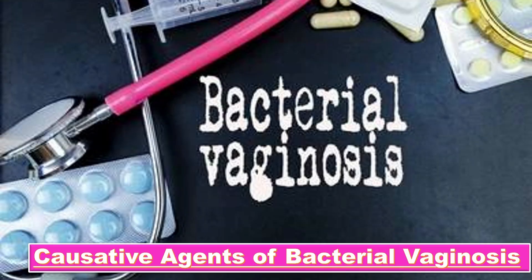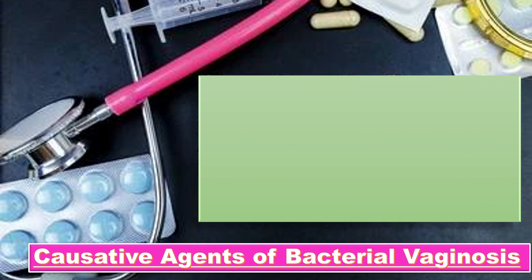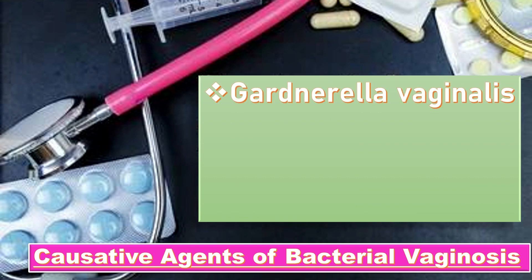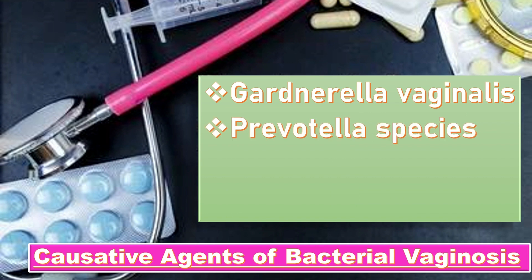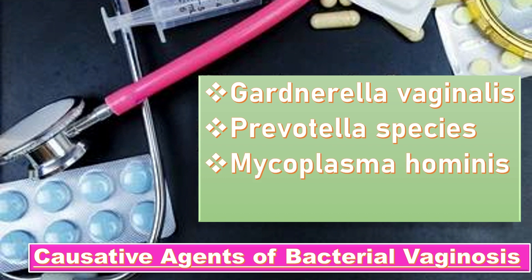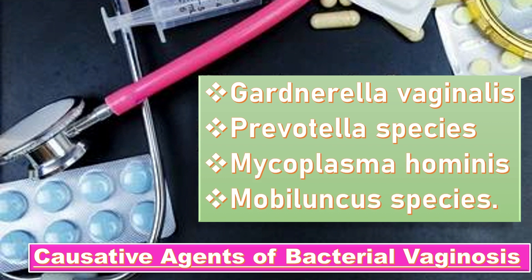What are the causative agents of bacterial vaginosis? Bacterial vaginosis is characterized by an overgrowth of predominantly anaerobic organisms like Gardnerella vaginalis, Prevotella species, Mycoplasma hominis, and Mobiluncus species in the vagina.